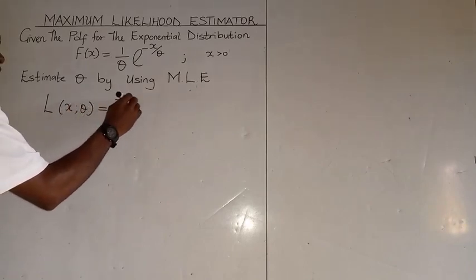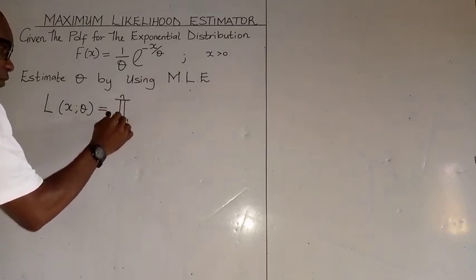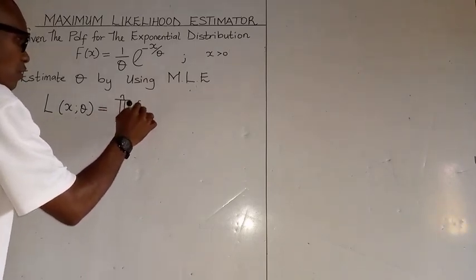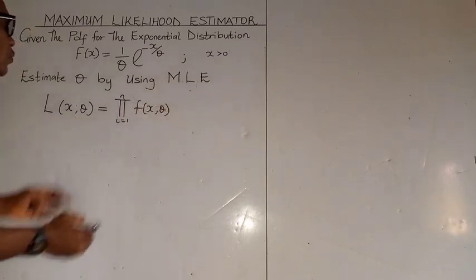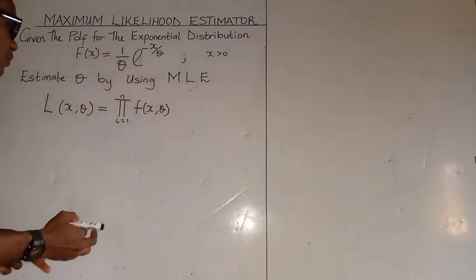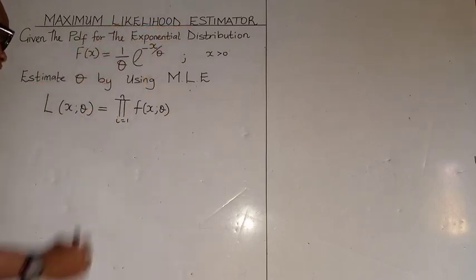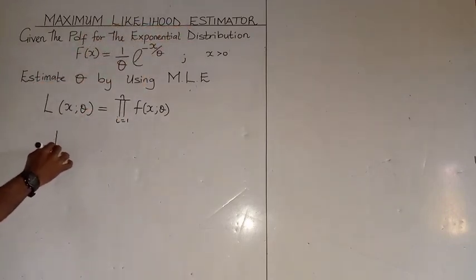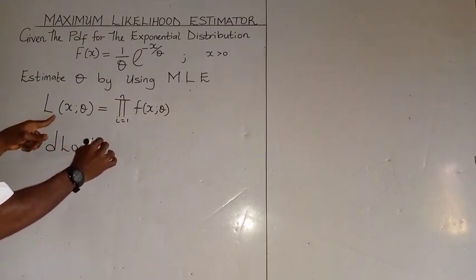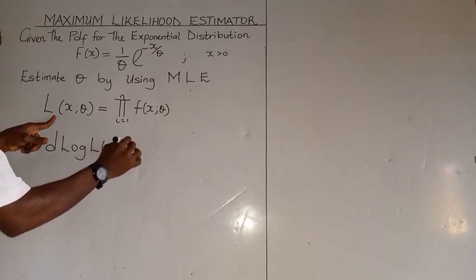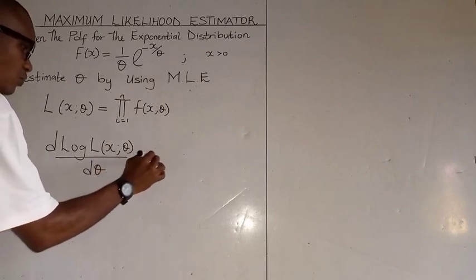The likelihood function is the probability of the function. We take the probability of this function, and we should recall that the solution to the maximum likelihood estimator is the differential of the log-likelihood equated to zero.